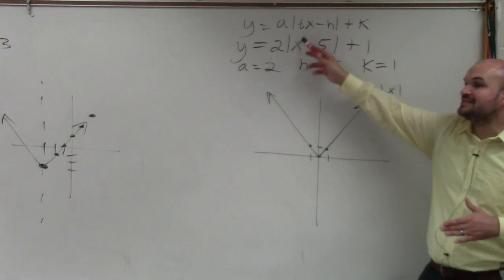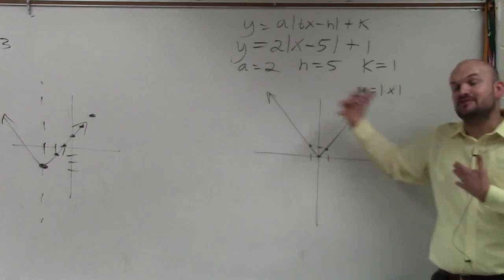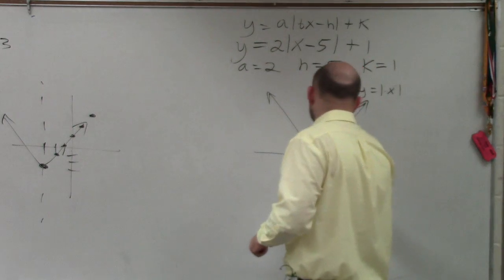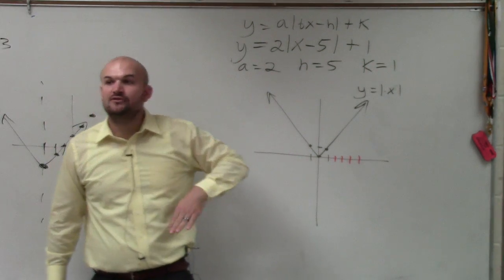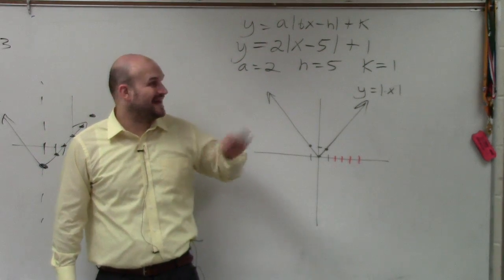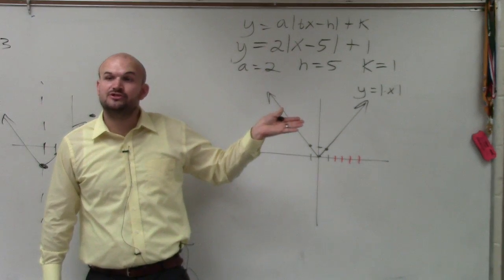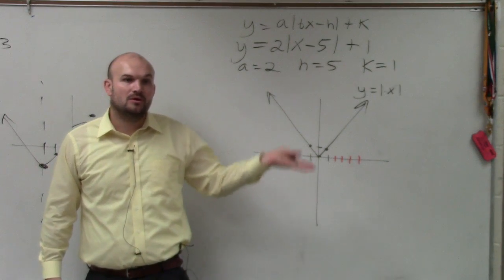But just remember, the equation says x minus h, so you're actually shifting it to the right. So I'm going to go with 5 units to the right, 1, 2, 3, 4, 5. k is going to be my vertical shift up and down. k is 1. So that's going to tell me to shift my graph up 1 unit.